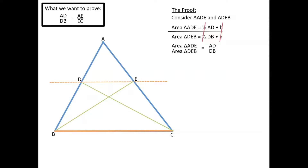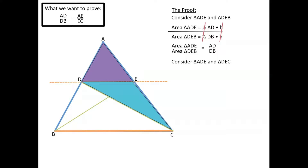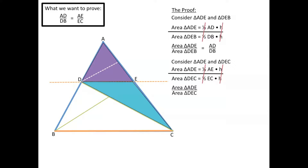Now let's consider triangle ADE and triangle DEC. These two triangles also share the same height, shown by the white line. We can write out the areas and divide them; the halves and heights cancel again, leaving us with: area of ADE over area of DEC equals AE over EC.